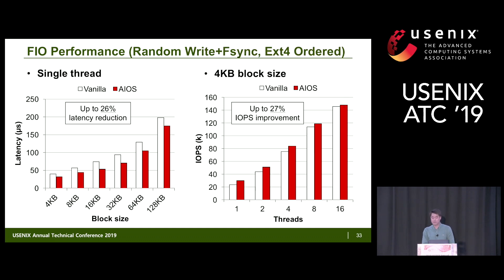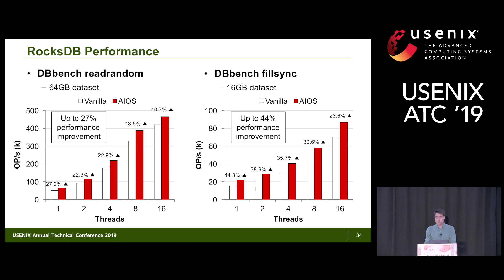For random write followed by fsync with EXT4 ordered journaling mode, our scheme reduced latency by up to 26% and improved throughput by up to 27%. However, with increasing thread counts, computation and I/O naturally overlap, diminishing the benefit of our scheme. For real-world workloads using DB-bench read-random and full-sync from RocksDB, our scheme showed performance improvements of up to 27% and 44% respectively, though again the benefit diminishes with more threads due to natural overlap.